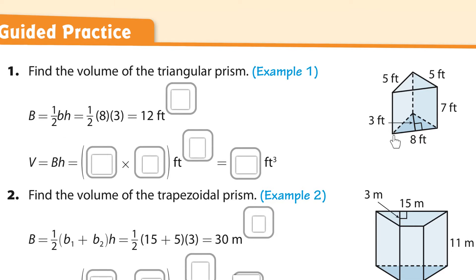1/2 base, which is the length of the base, which is 8, times the height of that triangle, which is 3. So that's why it's 1/2 × 8 × 3. And 1/2 times 8 is 4, and 4 times 3 is 12. This is square units, so that's a little exponent 2 — square is always 2.